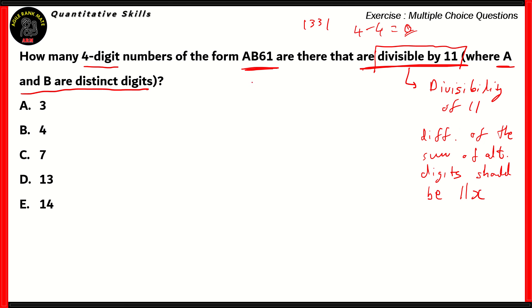The number that we have is AB61. Let's assume that this number is divisible by 11. That means A plus 6 subtracted with B plus 1 gives you a multiple of 11. When we remove the brackets, we get A minus B plus 6 minus 1 equals 11x. 6 minus 1 is 5. We take 5 to the right-hand side, so the difference between A and B is 11x minus 5. When x is 0, A minus B is equal to minus 5.